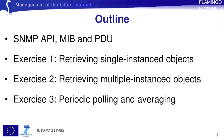In this first part I will briefly introduce the Simple Network Management Protocol, the associated application programming interface we will be using, the SNMP Management Information Base and the SNMP Protocol Data Unit. Then I will show you how a management application can be programmed in Java to retrieve single and multiple instance objects and how to perform periodic polling and averaging.